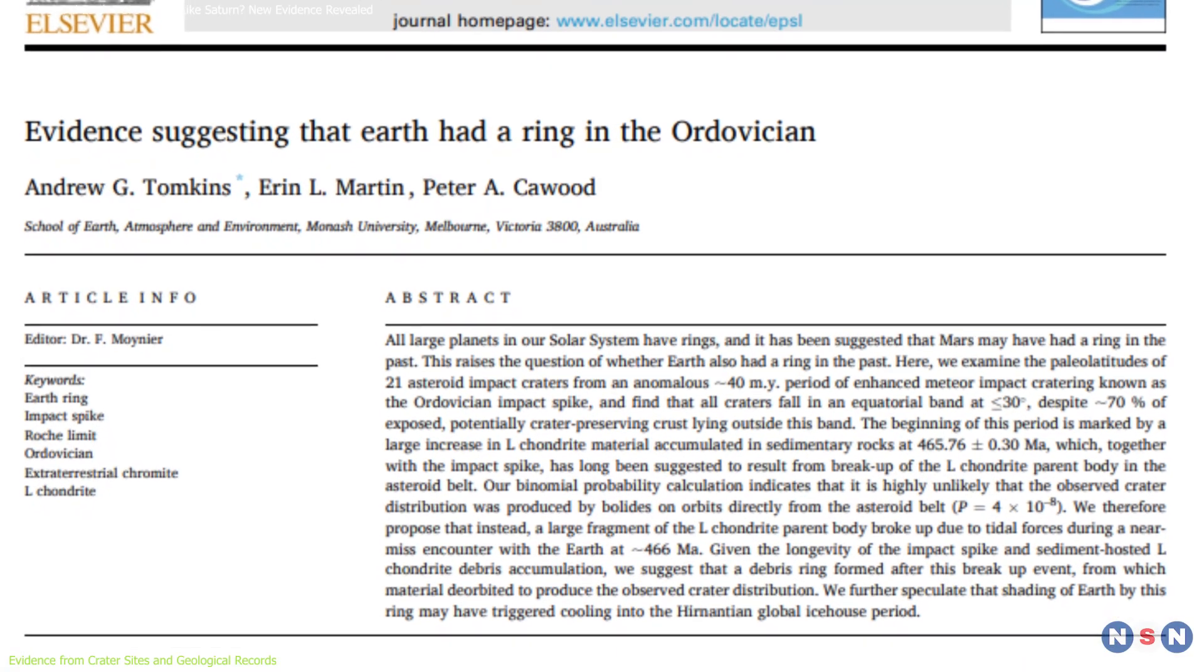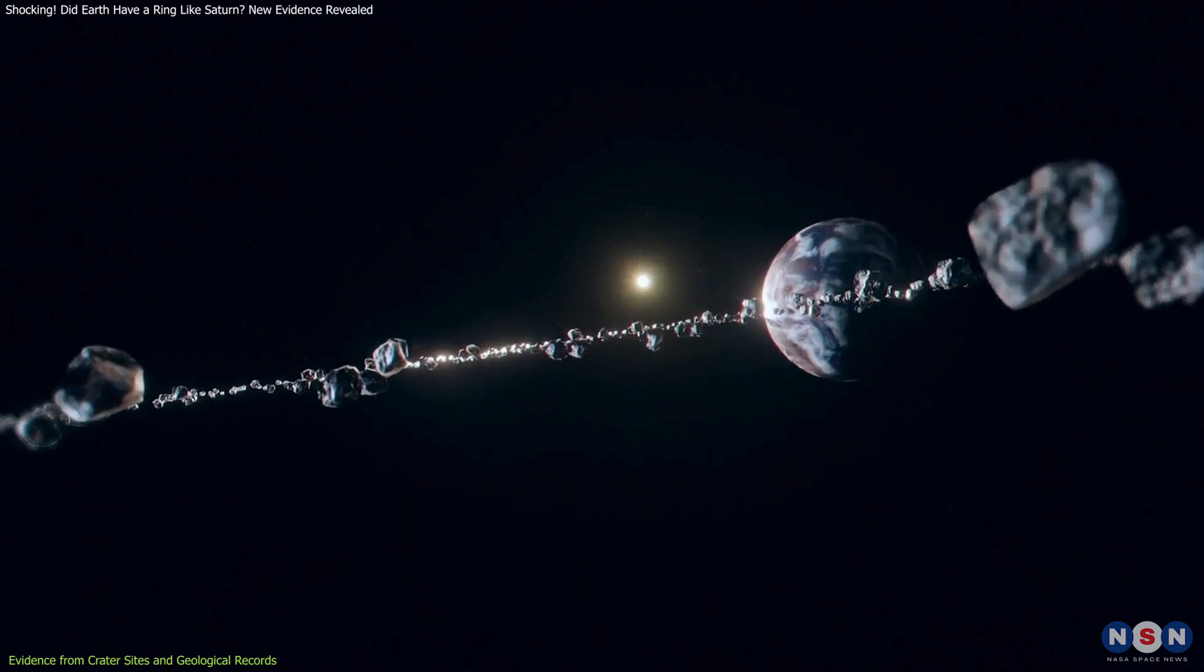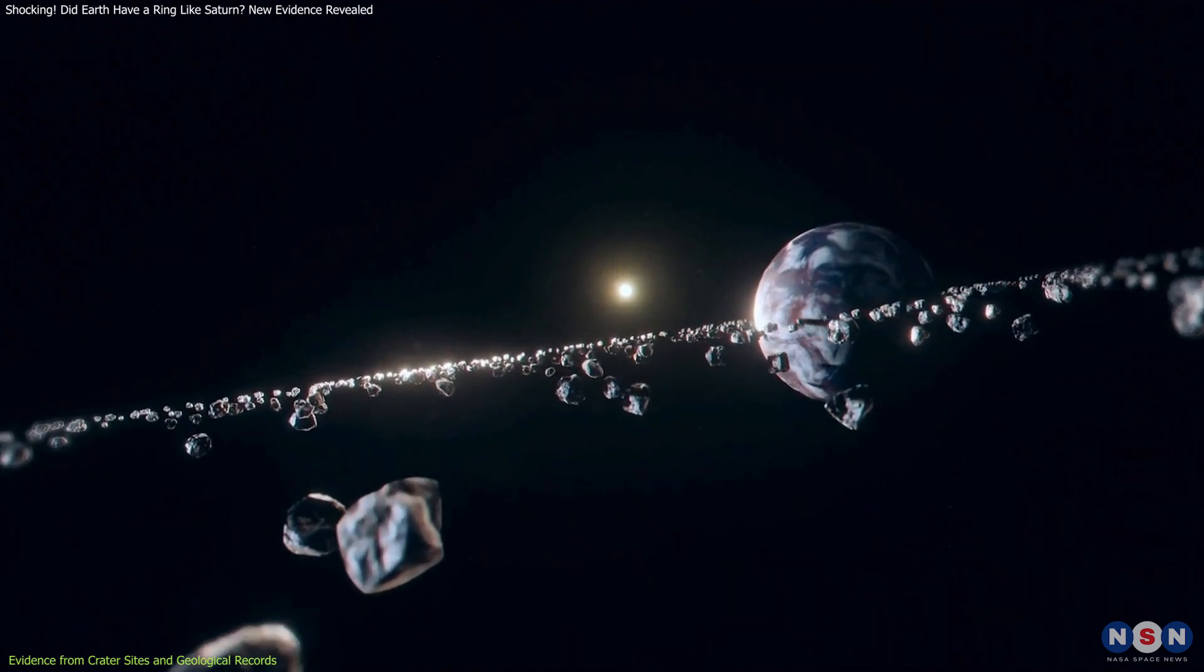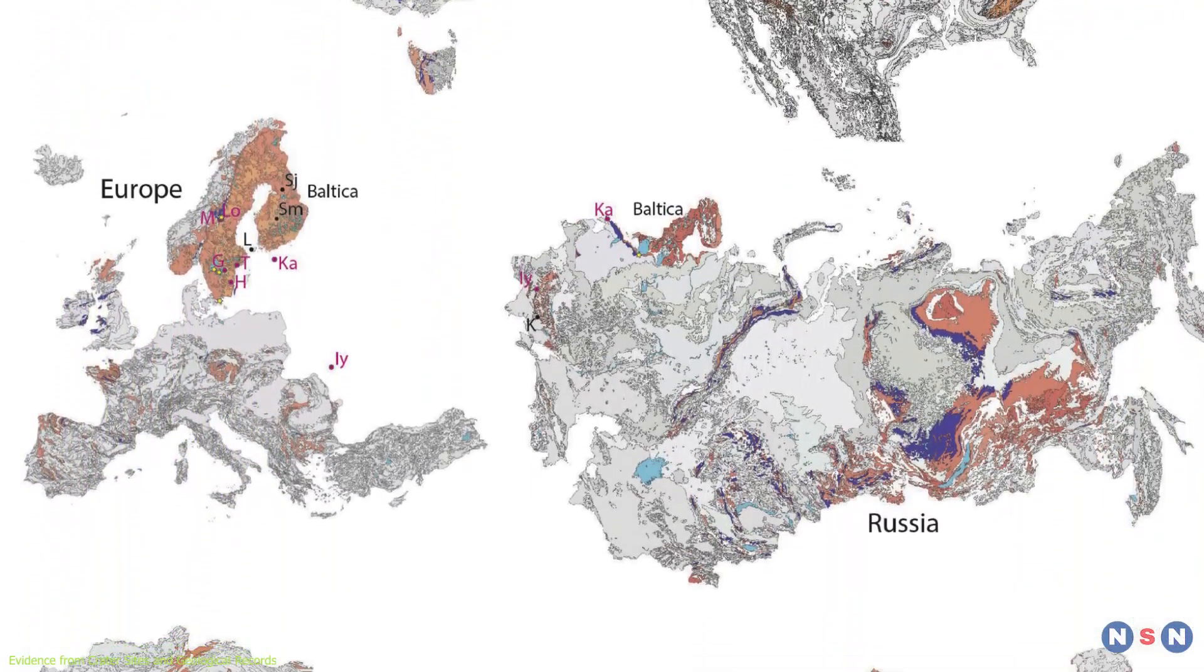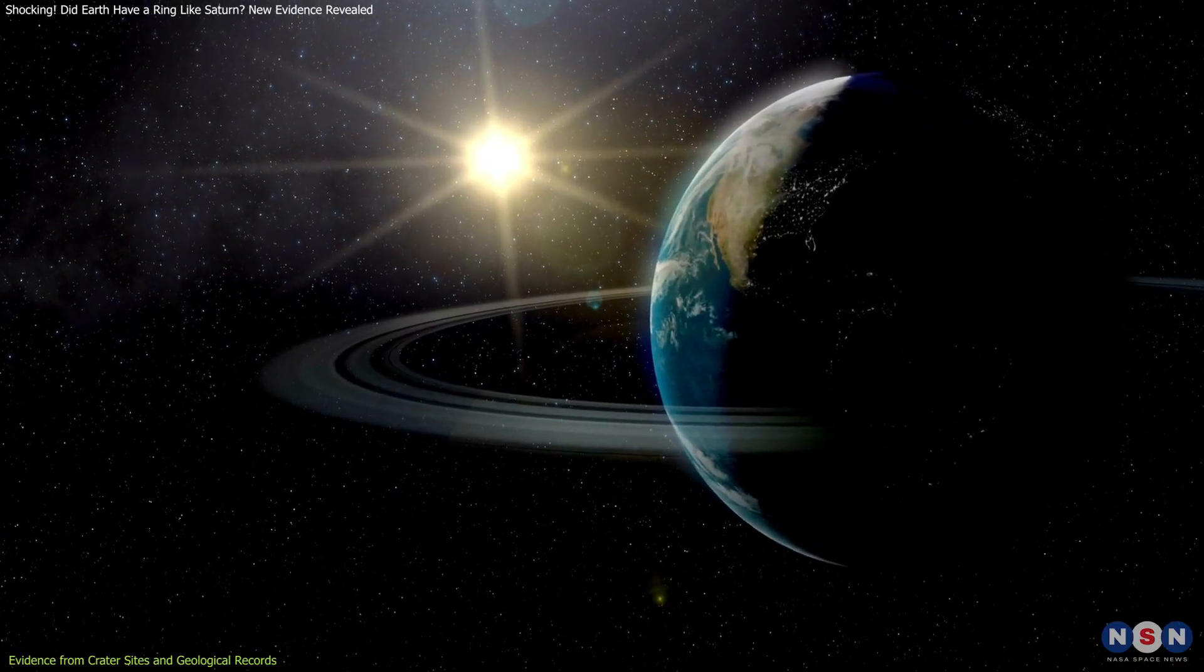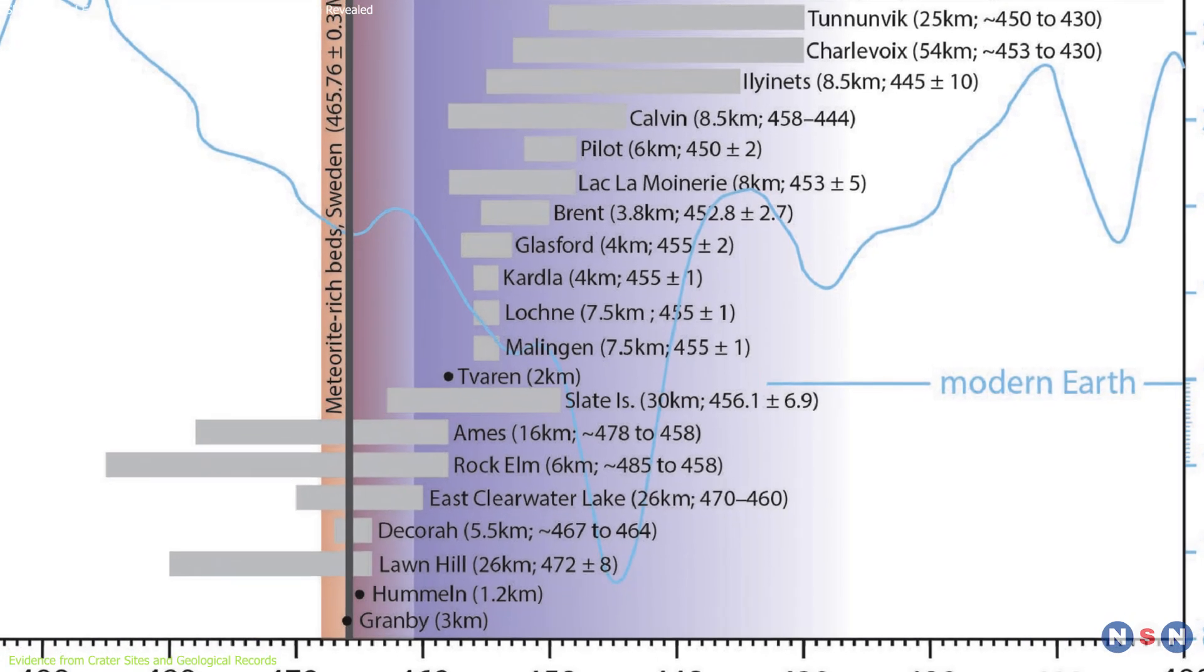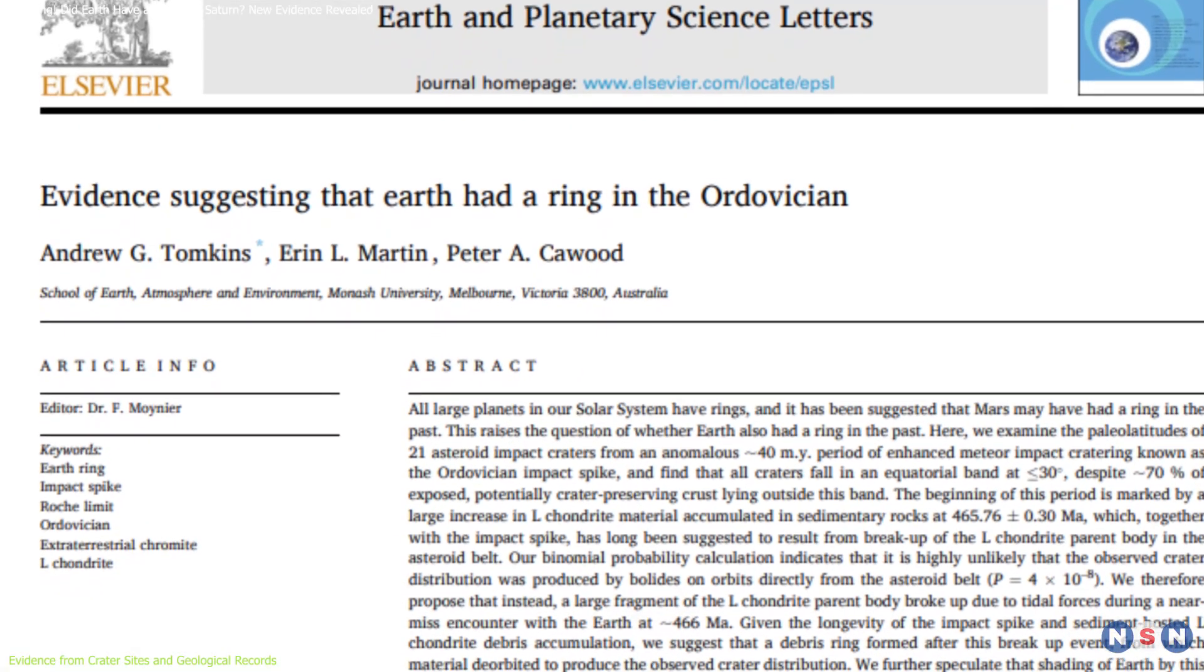Further supporting this theory is the discovery of consistent meteorite signatures in limestone deposits from the same time period, which were also located near the equator. These deposits contain specific types of meteorites that match the composition of the asteroid debris believed to have formed the ring. The consistency across various sites and geological layers points to a common source, likely the debris from a ring around Earth. The alignment of these deposits and craters in both time and location provide strong evidence for this hypothesis.